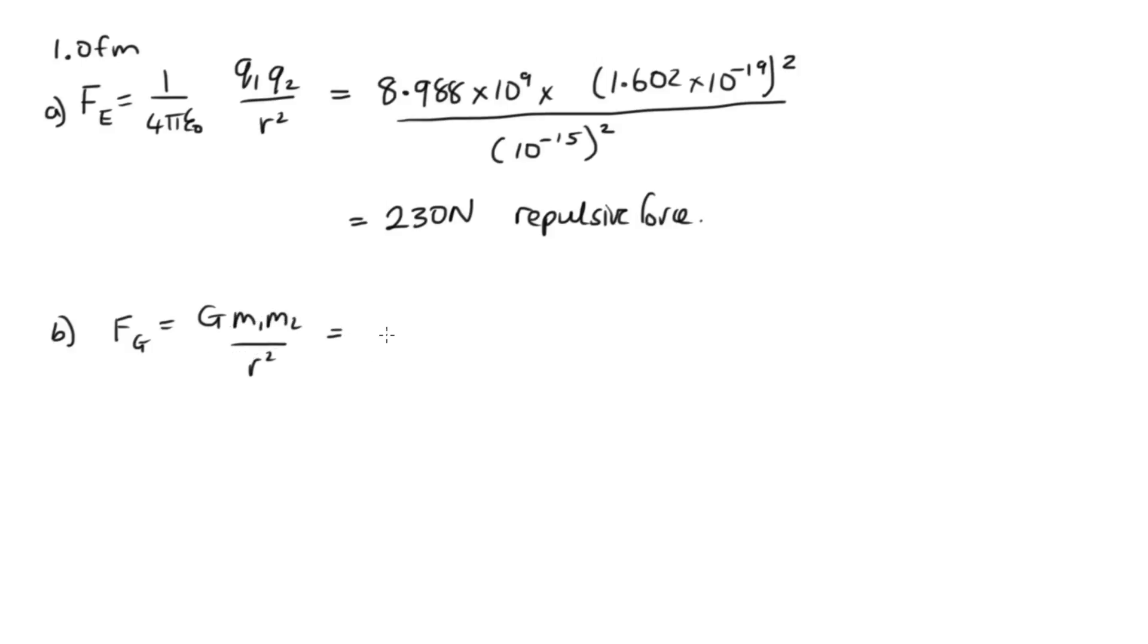So G, that's equal to 6.673 times 10 to the minus 11. Now the mass of a proton is 1.673 times 10 to the minus 27 kilograms. So there's two of those, and then they're separated by a femtometer. So solving this one on the calculator, we end up with a much smaller number, 1.9 times 10 to the minus 34 newtons.